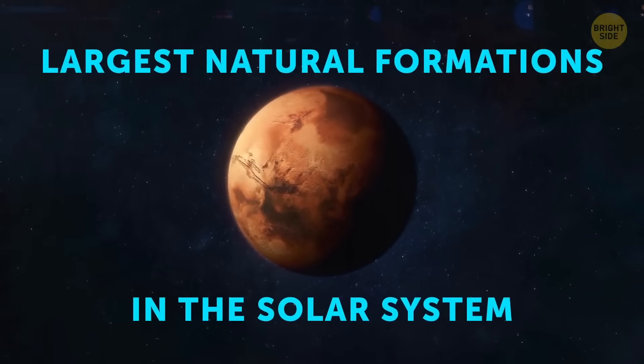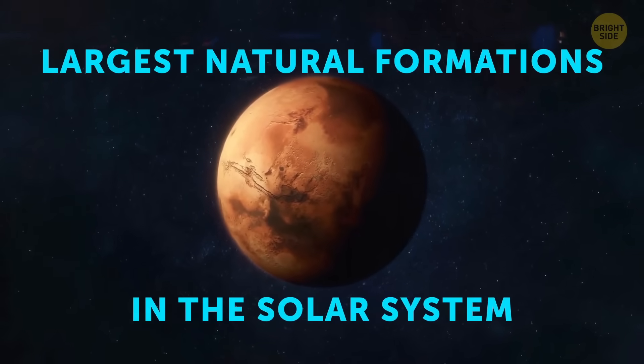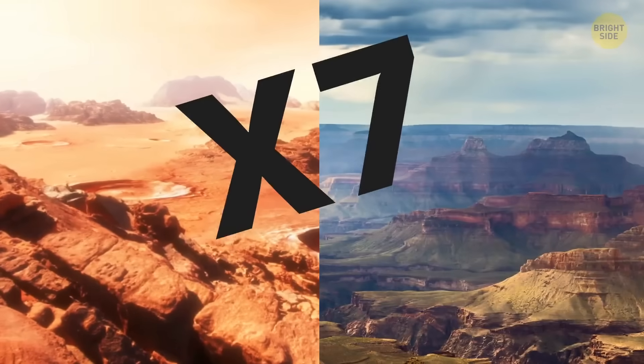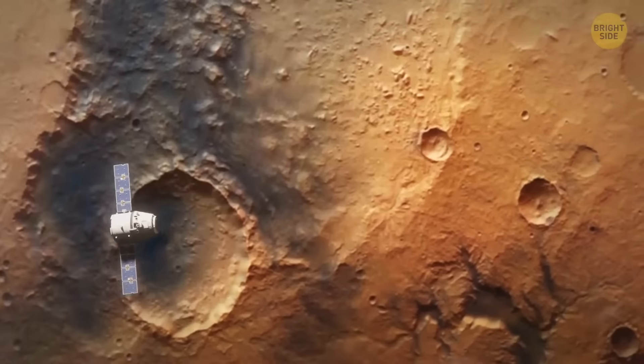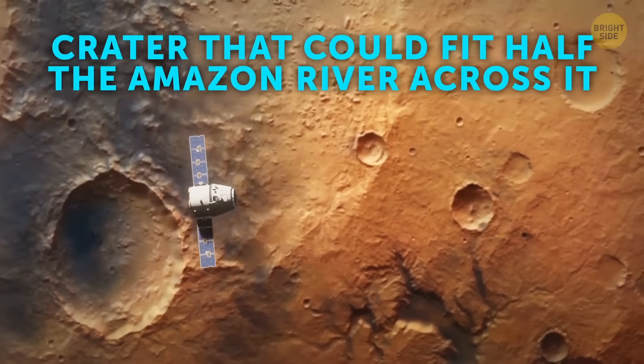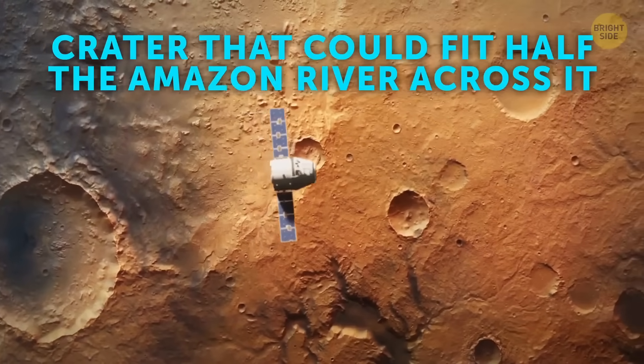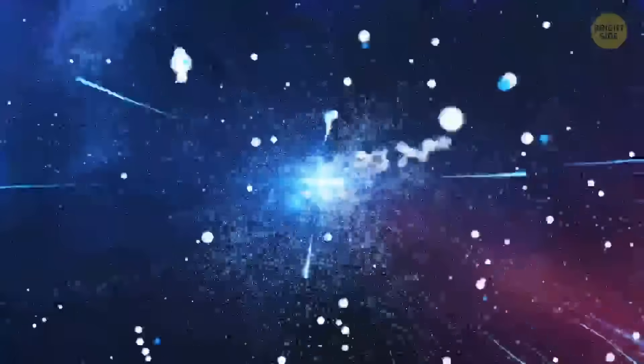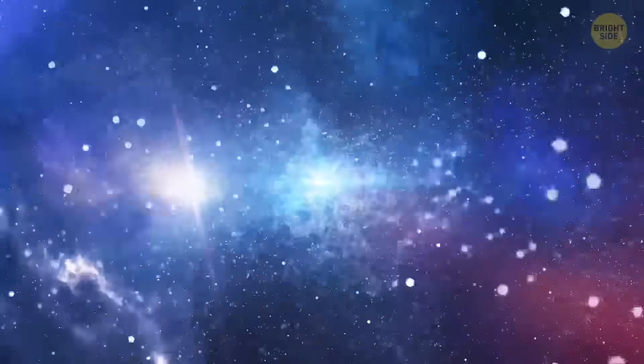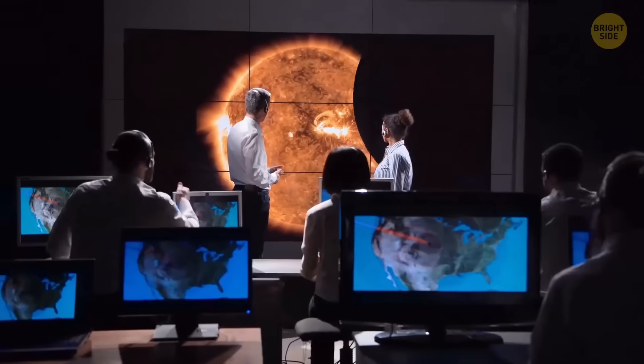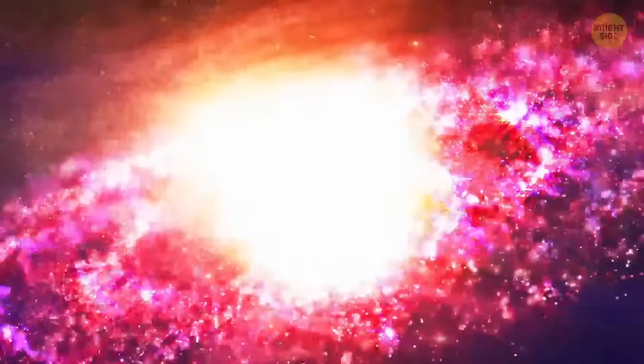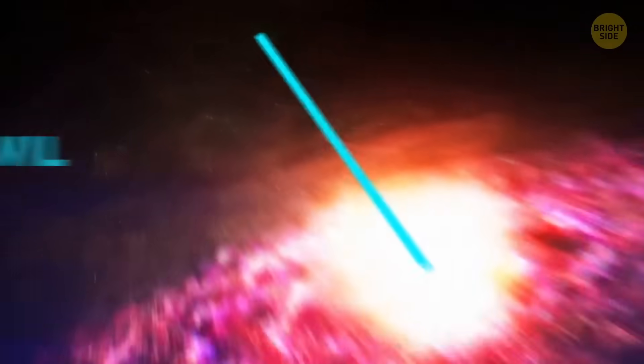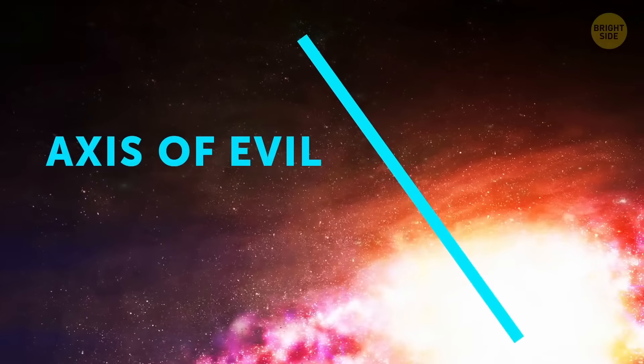Mars has the largest natural formations in the Solar System. The mountain three times taller than Everest, the canyon almost seven times longer than the Grand Canyon, and the crater that could fit half the Amazon River across it. Although the Big Bang Theory is the most viable one, researchers still find evidence against it. For example, one theory suggests there's an axis around which the whole universe rotates. It's aptly named the Axis of Evil.